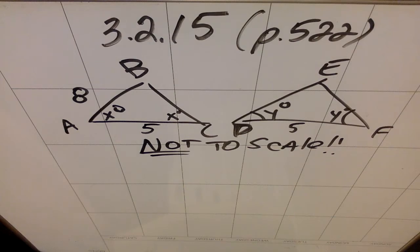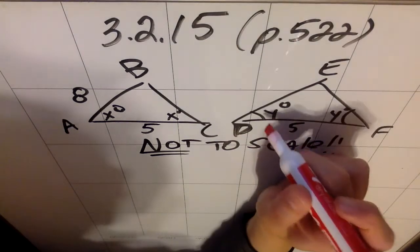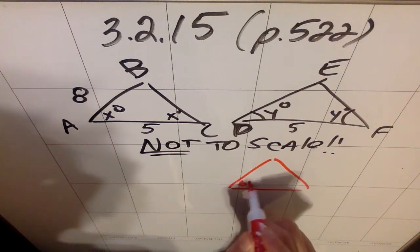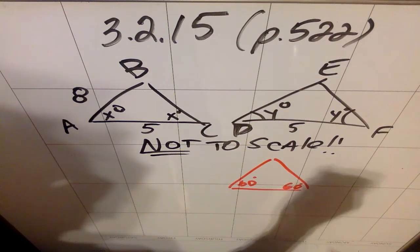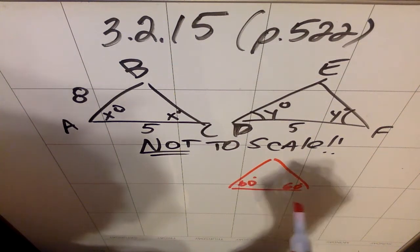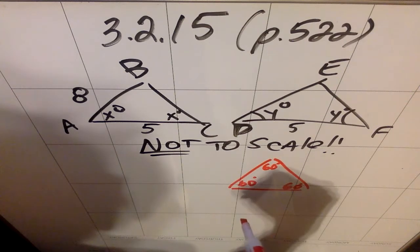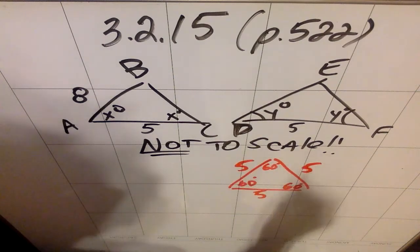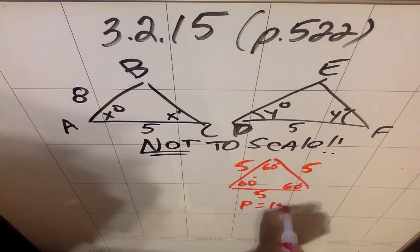If Y is 60, and again, this is not drawn to scale, but if these are both 60s, what we're actually looking at here is an equilateral triangle. Because if this is 60 and this is 60, 60 and 60 is 120, meaning the other side must also be 60. If all three angles are the same, all three sides are the same. So these guys are all 5s. So this guy has a perimeter of 15.